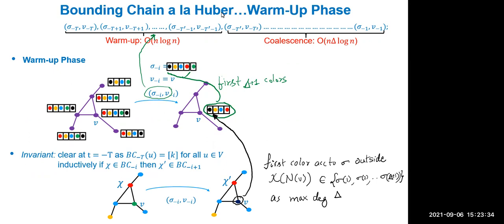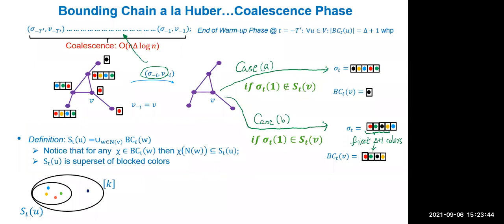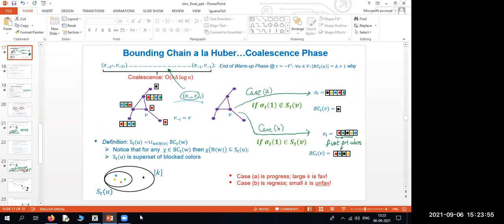The warmup phase ends after order n·log(n) steps, leaving every vertex with a list of only Delta plus one colors instead of k colors. This reduction in list size is the goal of the warmup: to significantly shrink the information that needs to be tracked before the coalescence phase begins. After a short break, the talk will continue from this point.